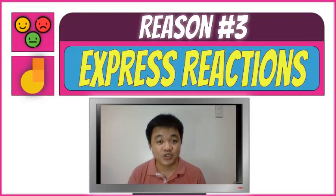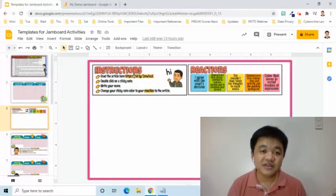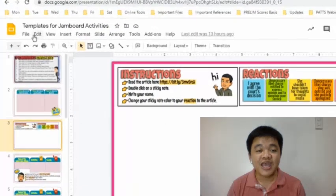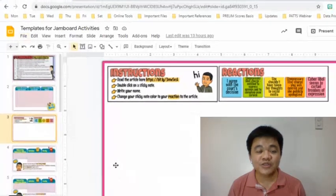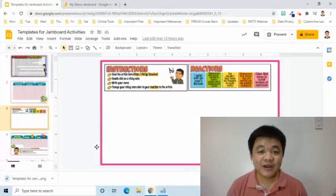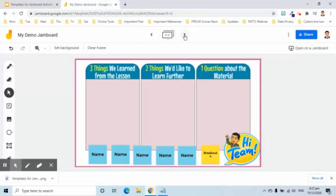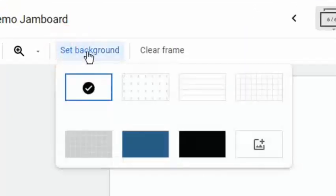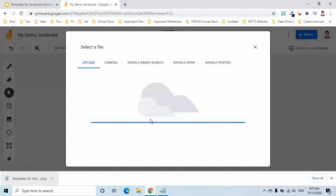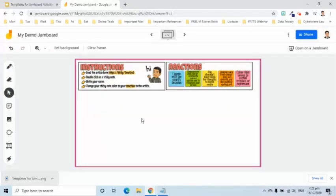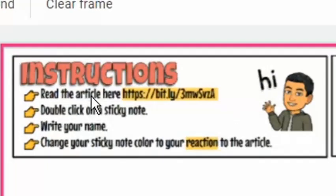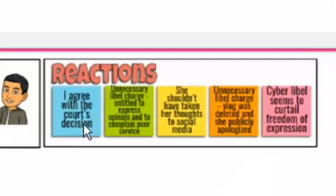The third reason is it can be used to easily get students' reactions on certain topics. For example, I have this activity where I ask my students to give their reactions after reading a news article. This template was also created in Google Slides. I will download it then upload to Jamboard and set it as a background image. As the instruction says, each student shall pick one reaction that best explains their feedback to the article, and each reaction has a unique color. Each color corresponds to a specific response that students can choose from.